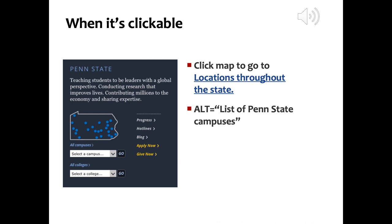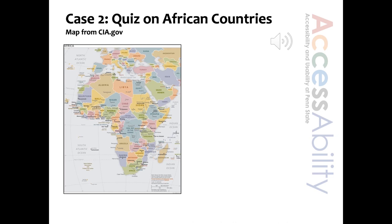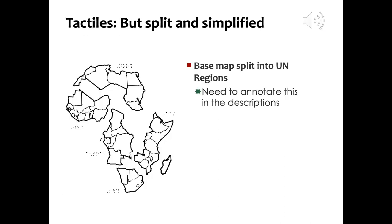Switching gears, this scenario — which happened twice in the same semester — is from a course which had a map quiz on the countries of Africa. The map here is a color map from CIA.gov with information on capitals and major bodies of water, as well as the outlines of the countries. The solution was definitely a tactile graphic. These are black and white line images printed on special paper, which are run under a heat lamp device. The heat causes the black ink to swell and become embossed, but there are limits. Given the size of some African countries, it would be difficult to determine which ones they were with touch alone.